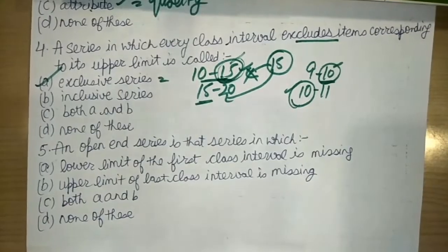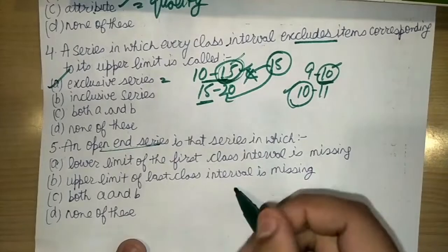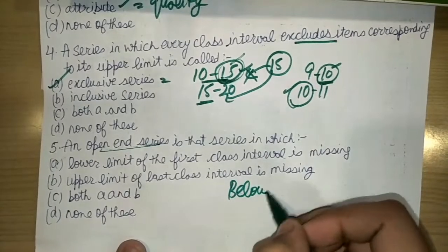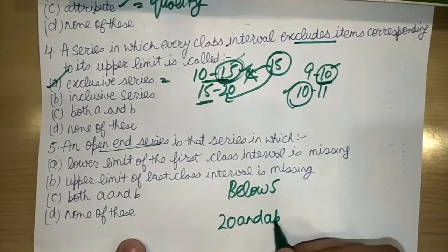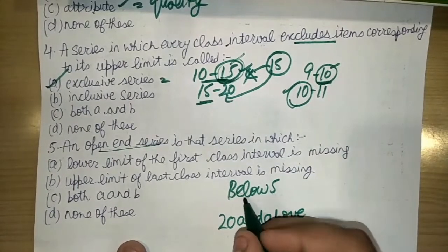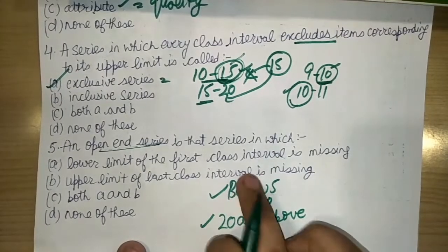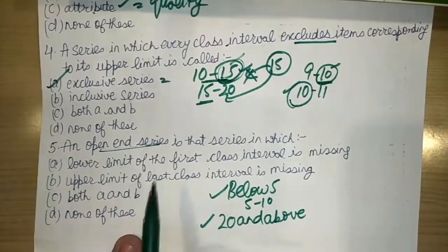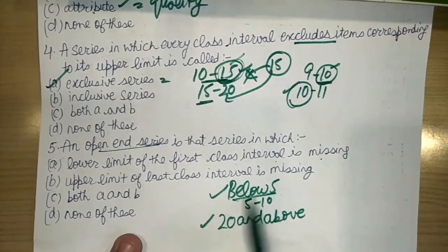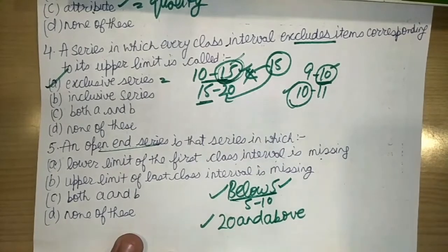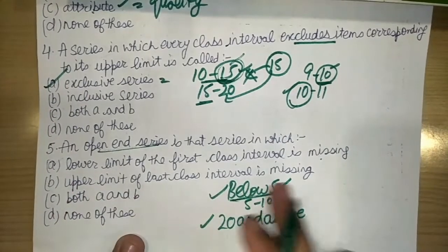The next question is: an open-ended series is that series in which what? An open-ended series starts from below, like 'below 5', and finishes with above, like '20 and above'. The first class has no lower limit and the last class has no upper limit. So the lower limit of the first class interval is missing — option A is correct. The upper limit of the last class interval is also missing.